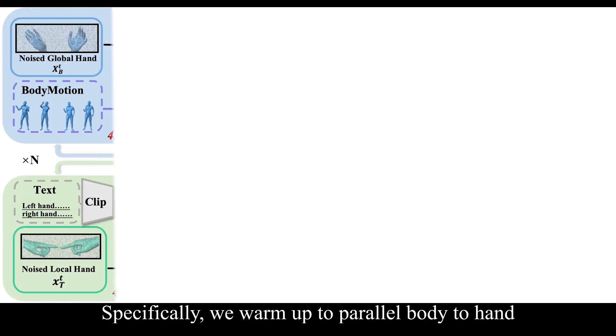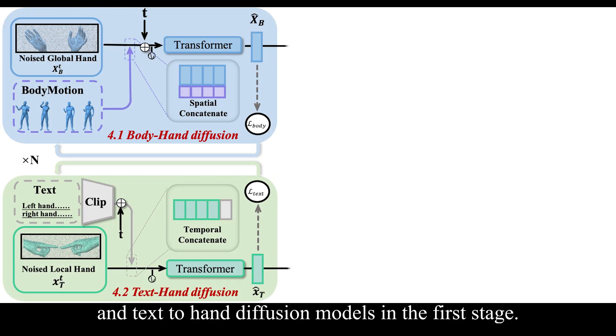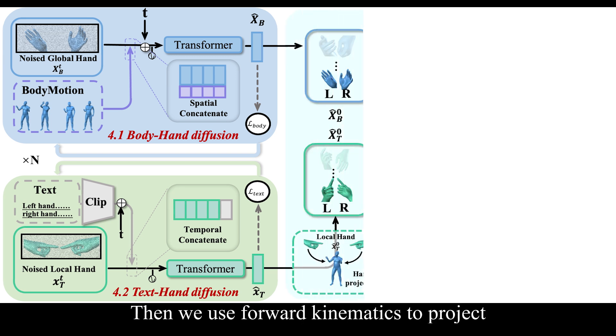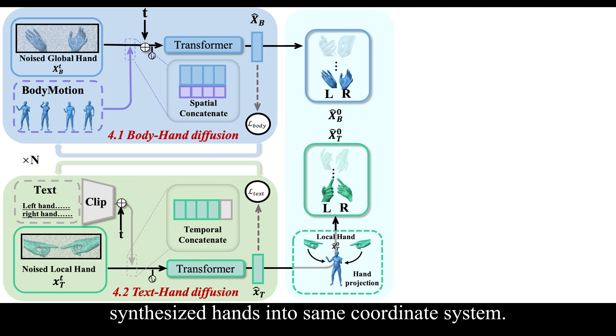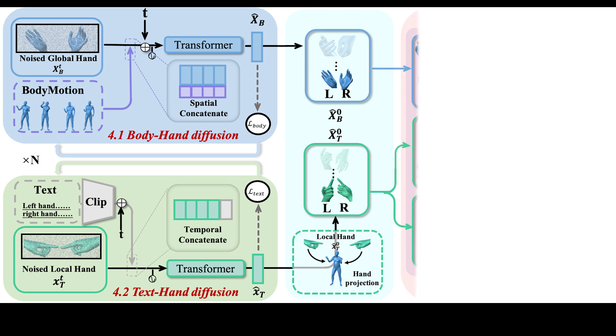Specifically, we warm up two parallel body-to-hand and text-to-hand diffusion models in the first stage. Then we use forward kinematics to project synthesized hands into same coordinate system. Finally, we leverage a cross-attention transformer to generate convincing and vivid two-hand motions.